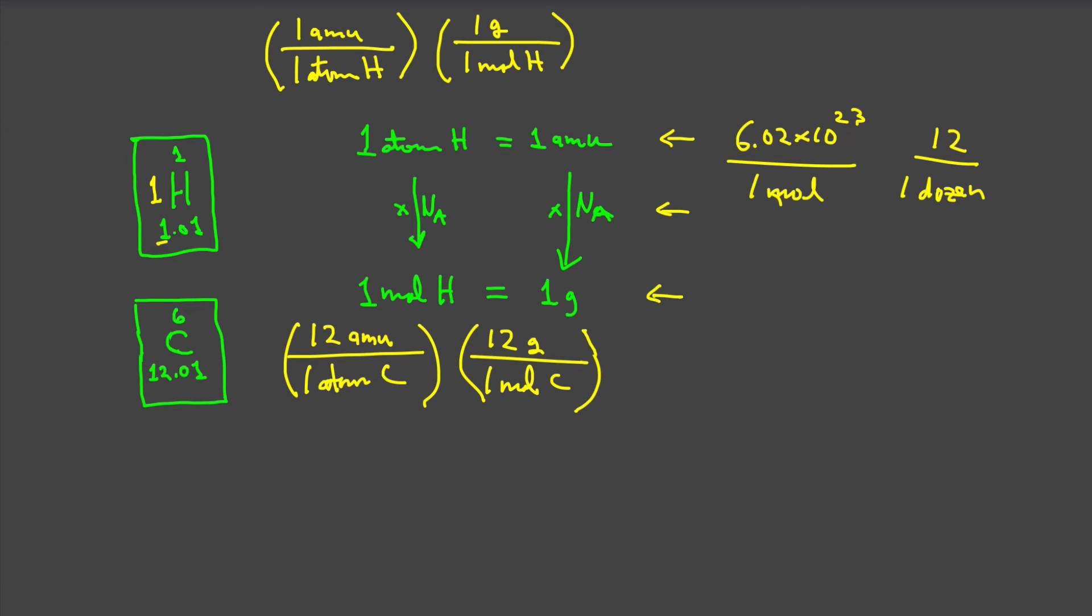We've now developed two important terms for information we can get off the periodic chart. You get the mass of a particular atom, one atom of material. And that's called the atomic weight, or sometimes atomic mass. And you also have the weight of one mole of material. And that's oftentimes referred to as the molar mass.